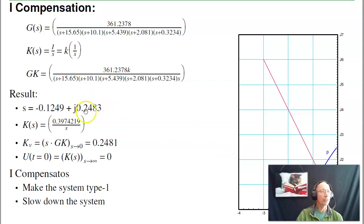With that, I have my error constant KV is 0.24, and my input at T equals zero is K of S as S goes to infinity, which is zero. So notice I compensators slow up a system, but they do force the steady state error to zero.